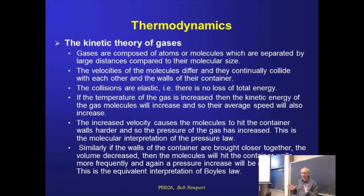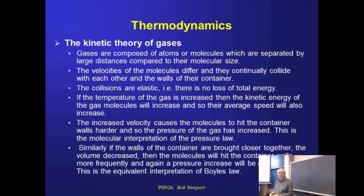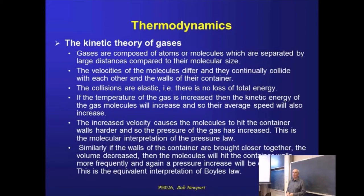So now we're going to think about what we mean by a perfect gas and the motion of the atoms or the molecules within that gas. This PV equals NRT equation is going to kick back in in a few slides' time, because we're going to try and get an expression for the mean velocity of a given gas molecule at a given temperature. That's essentially where we're heading.